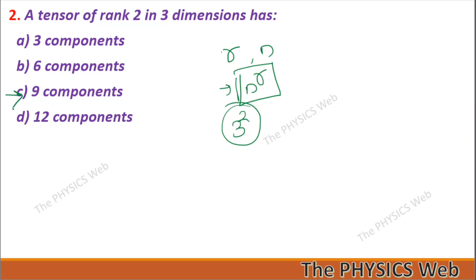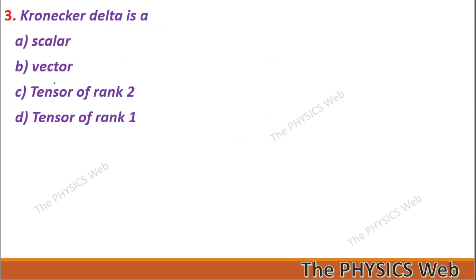So C is your correct option. Next: the Kronecker delta is a tensor of rank two — C is your correct option.